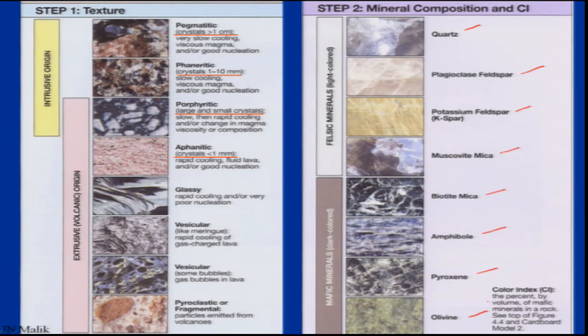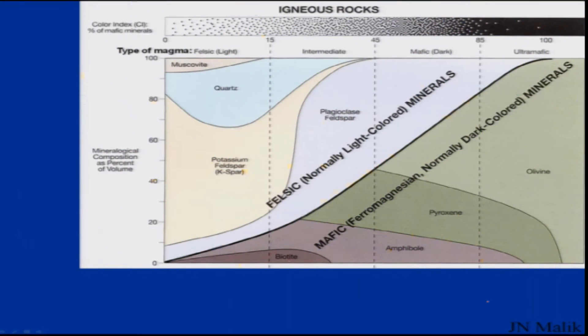Texture refers to crystal size and the appearance of the rock surface, combined with mineral composition. Based on the color index, you can identify felsic and mafic rocks.